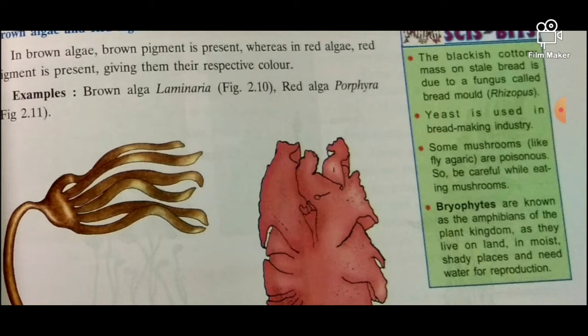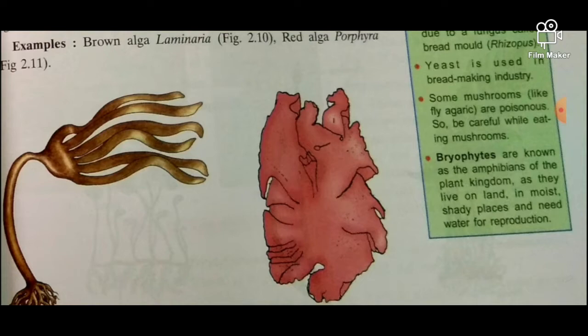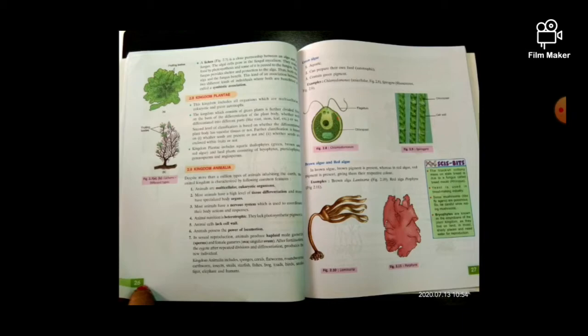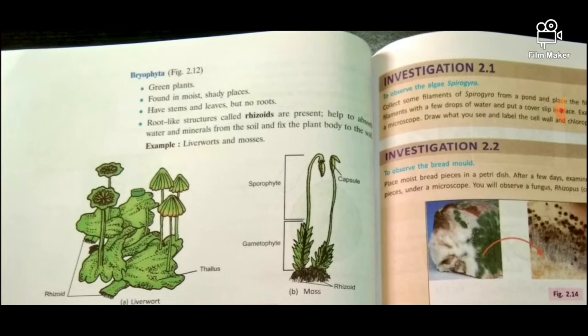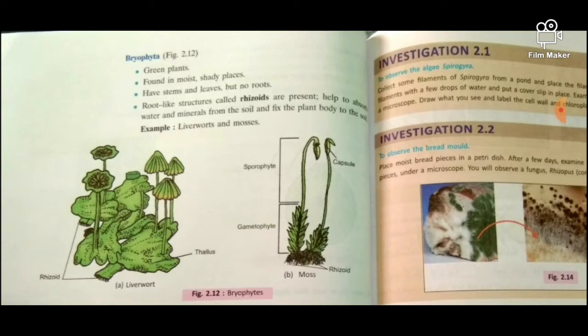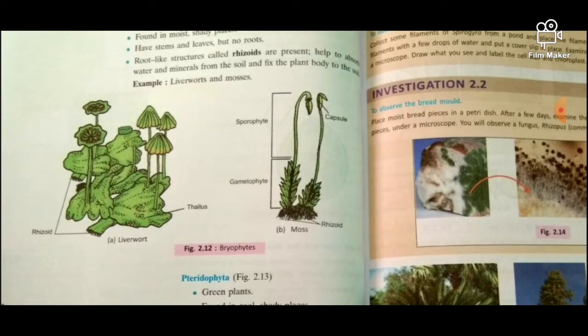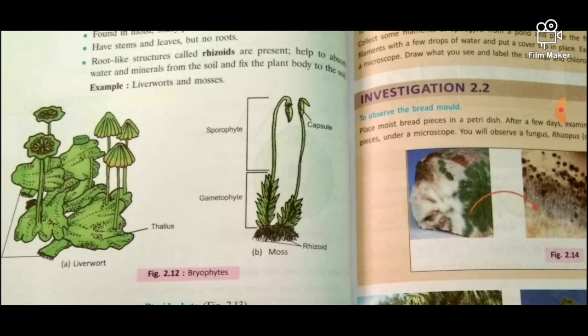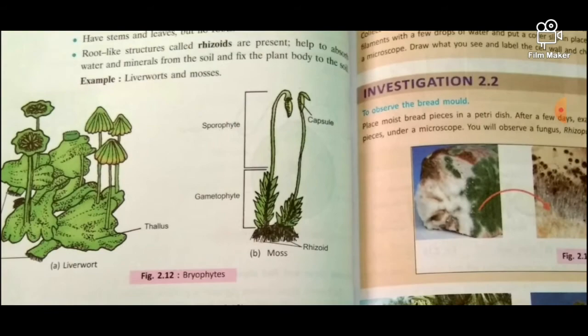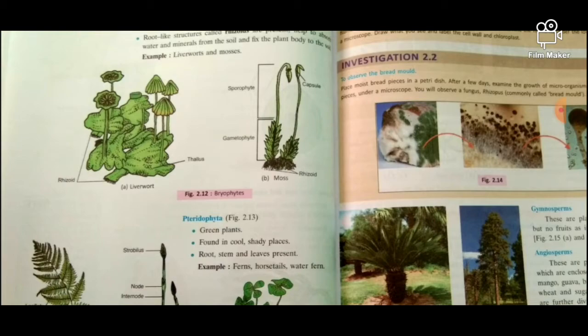Bryophytes are known as the amphibians of the plant kingdom, as they live on land in moist shady places and need water for reproduction. Bryophytes are green plants found in moist shady places. They have stems and leaves but no roots; root-like structures called rhizoids are present, which help to absorb water and minerals from the soil and fix the plant body to the soil.